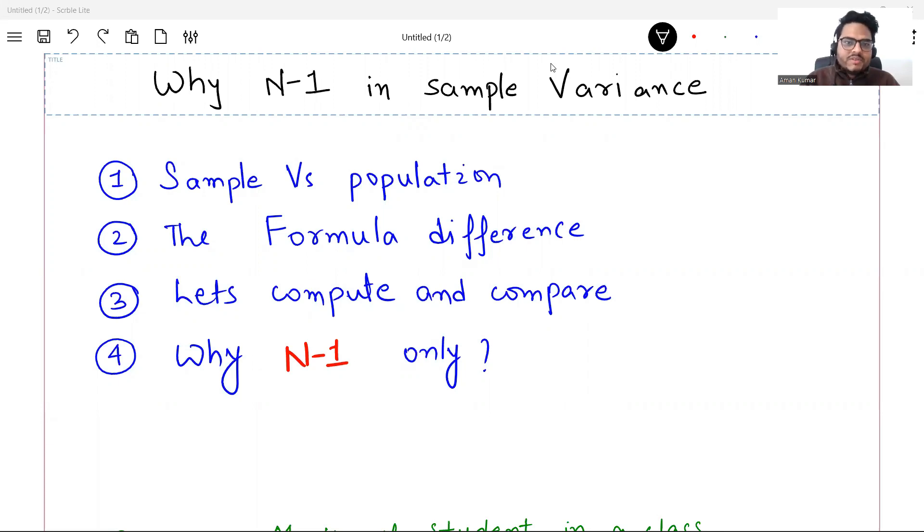Hello everyone. I'm sure you would have seen this question in some of your interviews or data science discussions: Why n-1 in sample variance? I asked this question a few days back on YouTube and got some very interesting answers. This video I'm going to explain in four steps without using any industry jargons why n-1 is there in sample variance.